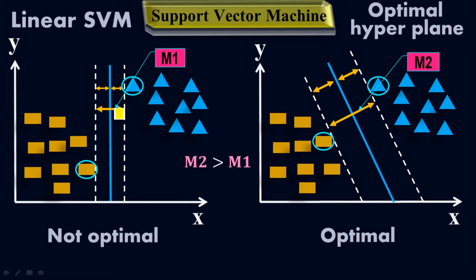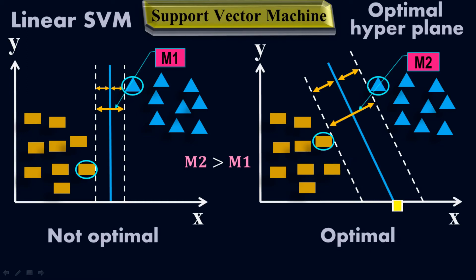Now I pick the same data pattern for a second SVM machine model. This is my first SVM model and this is my second SVM model. With the same data pattern, this time I'm drawing the decision boundary at around 120 to 130 degrees. This is my dotted line which touches the data points. This is my support vector here — compare this to the previous support vector, which was positioned differently.